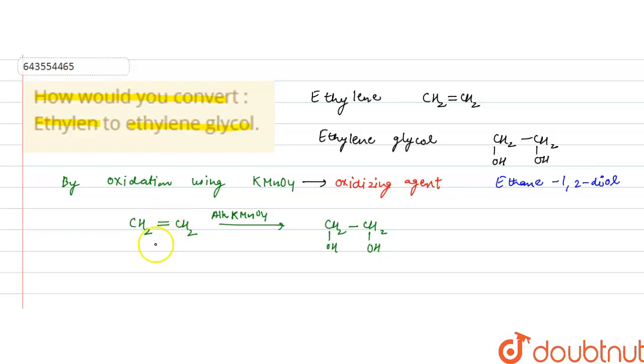And so it will do the oxidation of ethylene to ethylene glycol, which is also known as ethane-1,2-diol. So this is how ethylene can be converted to ethylene glycol by using alkaline KMnO4 that is a strong oxidizing agent. I hope you understood the solution. Thank you.